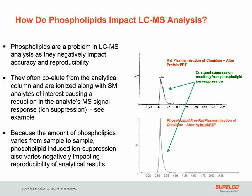So how do phospholipids impact LC-MS analysis? First, because of the variability in concentration, they negatively impact accuracy and reproducibility. This is because they often co-elute with analytes of interest and are ionized along with the analyte. As you can see from this example, the signal for clonidine was suppressed by the presence of phospholipids in the rat plasma. Differing amounts of phospholipids would vary the amount of suppression, preventing accurate measurement.